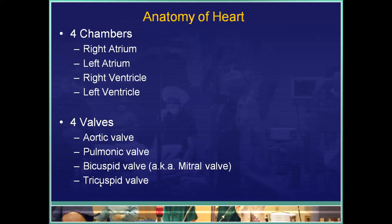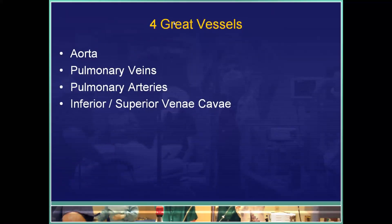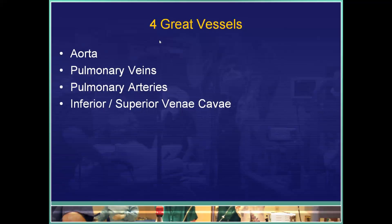You can remember that the tricuspid is on the right because it has an R in it for right. At the beginning of the aorta, which is one of the great vessels associated with the heart, is the aortic valve, and at the beginning of the pulmonary arteries or pulmonary trunk there's the pulmonic valve. The four great vessels are the aorta, the pulmonary veins, the pulmonary arteries, and the inferior and superior vena cavae.